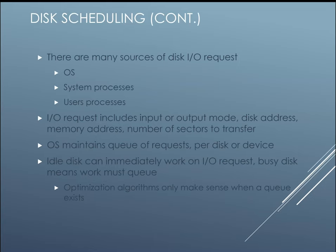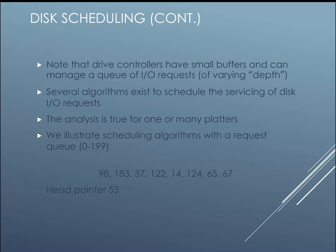There are many sources of disk IO requests — from the OS, from a system process, or from a user process. IO requests include input or output mode, disk address, memory address, and number of sectors to transfer. The OS maintains a queue of requests. An idle disk can immediately work on a request, while a busy disk must queue it. Optimization algorithms only make sense when a queue exists.